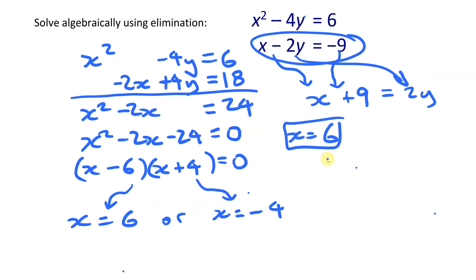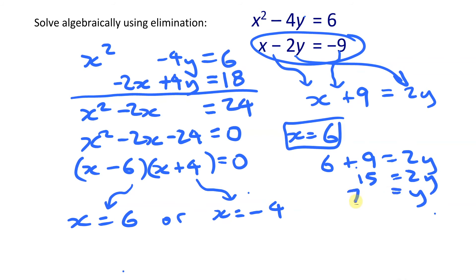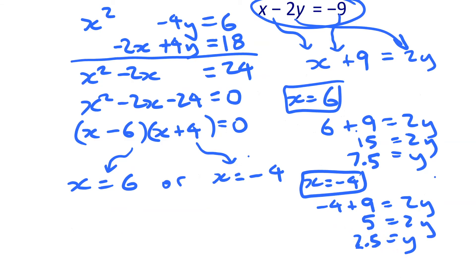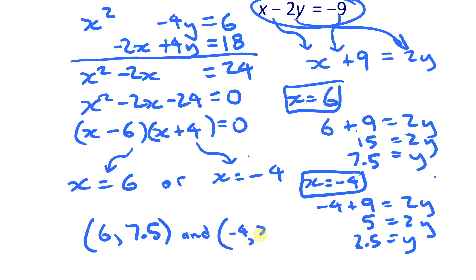When x = 6, substituting gives 6 + 9 = 2y, so 15 = 2y, meaning y = 7.5. When x = −4, substituting gives −4 + 9 = 2y, or 5 = 2y, so y = 2.5. The system has two solutions: (6, 7.5) and (−4, 2.5).